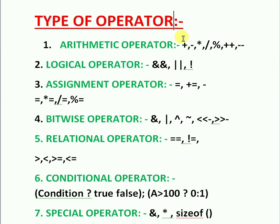Logical operators: AND (&&) is used to check if both operands are true. It is used between two operands — it checks if both operands are true.